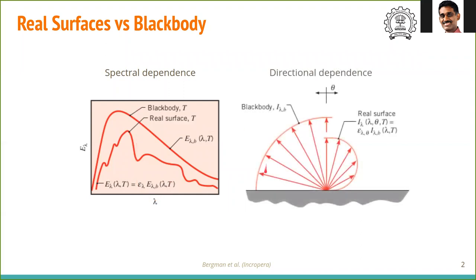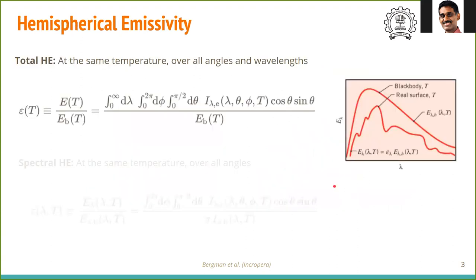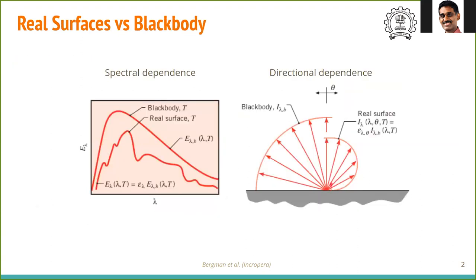Not only that, a blackbody, as we saw, is directionally independent. That is, it is diffuse. So in every direction, the intensity is the same. However, for real surfaces, the intensity could change depending on the direction. Surface could be rugged, reflective, or have some small kinks. Therefore, a real surface is both non-ideal in terms of the spectral distribution as well as the directional distribution.